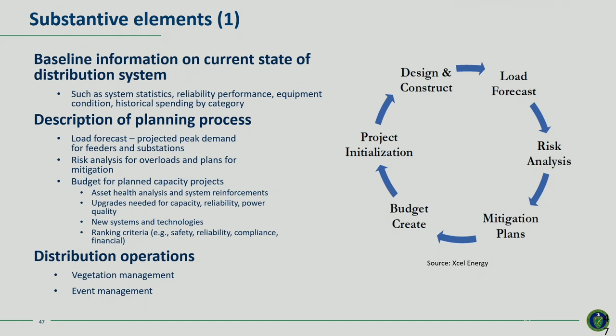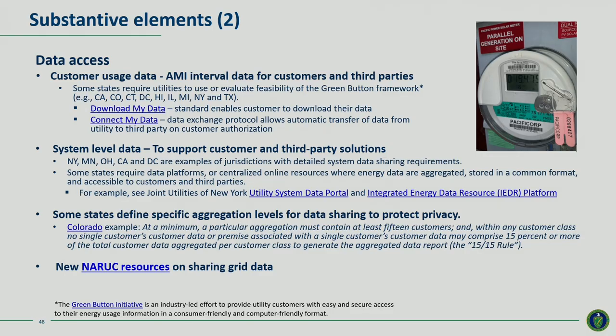Distribution operations are also really important, and you want to see information in the distribution plan around vegetation management — so important given all the wildfires we've been dealing with — as well as managing reliability events: what is the utility doing to prevent outages, and when outages do happen, how do they get back online as quickly as possible? On data access, there are two kinds: customer usage data using interval information from advanced metering infrastructure, and system-level data on things like solar hosting capacity and interconnection queues. New York and California require online data platforms — a standardized way to show information to developers, customers, and third-party service providers in a common format. States are also establishing aggregation requirements to ensure customer privacy; for example, Colorado has a 15-15 rule requiring shared data to represent at least 15 customers with no single customer representing more than 15% of the aggregated data.